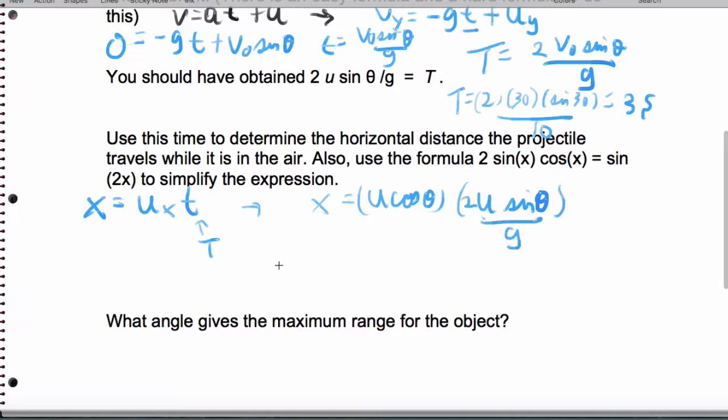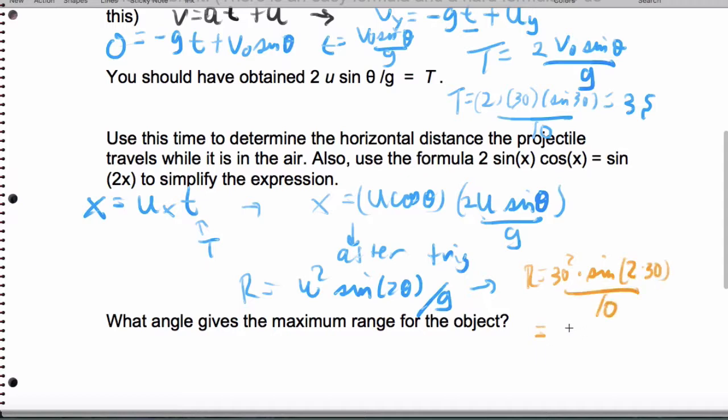There's quite a bit of trig here that we can use to simplify. After doing trig, we're going to get that the range is U squared sine of 2 theta divided by G. Again, using the numbers that they give us, I could say that the range R is 30 squared times sine of 2 times 30 divided by 10. When I simplify this, I'm going to end up getting something like 78 meters.